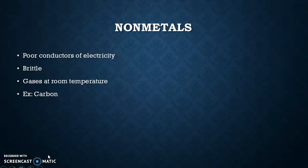Continuing on from the previous lecture, this is part two of your chemistry lecture. We're going to start off with the nonmetals and their characteristics. Nonmetals are poor conductors of electricity, they're brittle — which means they break easily — and most of them are gases at room temperature. Prime examples would be carbon, oxygen, and pretty much any of your noble gases, so your eighth group.